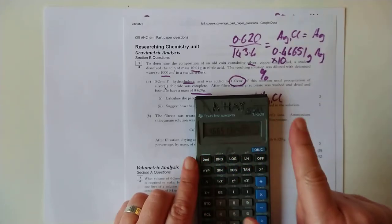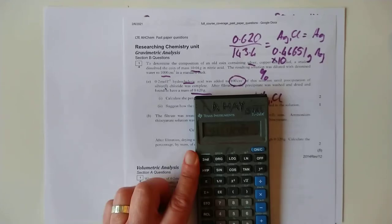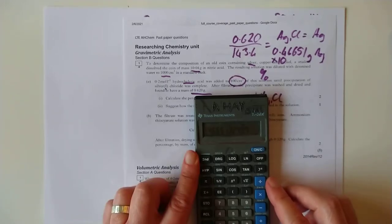So, that's looking more like it. 4.665 grams of silver in a 10.04 gram coin. Let's do a little percentage calculation on that. In fact, we'll just keep that number there. We won't do any rounding at all. Divide that by 10.04.